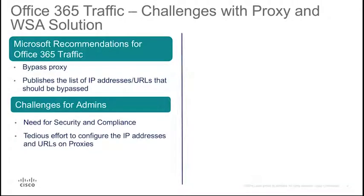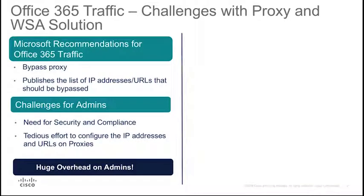Enterprises need to ensure security of the traffic passing through their networks. For compliance, enterprises need to log the traffic sent out of their networks. Hence, bypassing the proxy for Office 365 traffic is not a solution that administrators consider. Administrators need to configure a large number of IP addresses and URLs on their proxies, which is tedious, and they have to perform this every time the feed is updated. Hence, migration to Office 365 applications is not seamless and is a huge overhead on administrators.